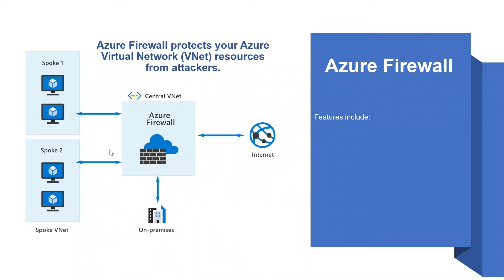You can deploy Azure Firewall on any virtual network, but the best approach is to use it on a centralized virtual network. All your other virtual and on-premises networks will then route through it. The advantage of this model is the ability to centrally exert control of network traffic for all your VNets across different subscriptions. With Azure Firewall, you can scale up the usage to accommodate changing network traffic flows, so you don't need to budget for peak traffic.